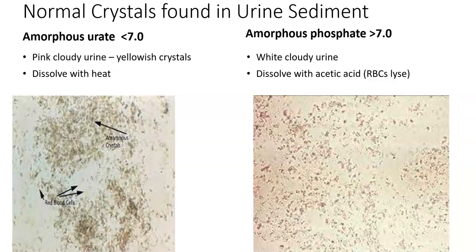When you use acetic acid solution to dissolve amorphous phosphates, it will also lyse any red cells present. You want to make sure you can identify any red cells first — confirm your blood on the dipstick was negative before dissolving them, or run two separate microscopics: one looking for and counting red cells, and one where you clear out the amorphous phosphates and look for everything else.